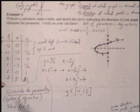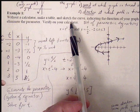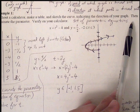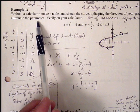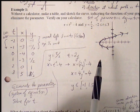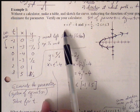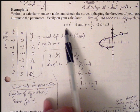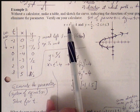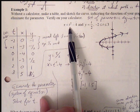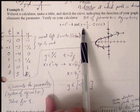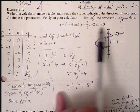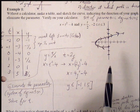Without a calculator, it says make a table. This is example one here. Sketch a curve and indicate the direction of your graph. Then we're going to try and eliminate the parameter and verify on our calculator. Well, in our calculator we can plug this in, but we can also do this by hand. So here we have a set of parametric equations, one in terms of x, one as y with a function with respect to t, and then our bounds between negative 2 and 3.